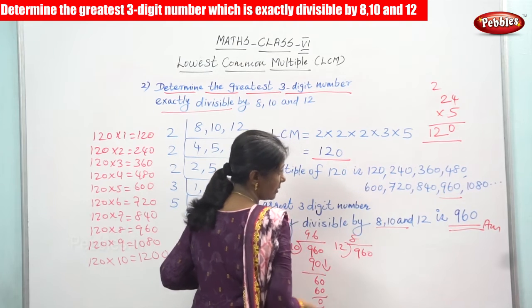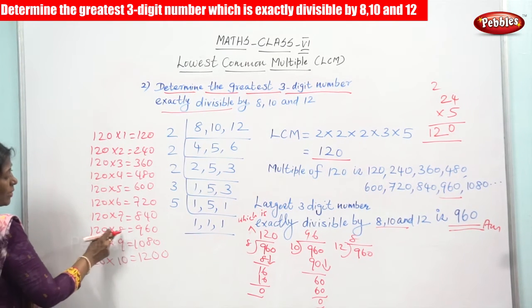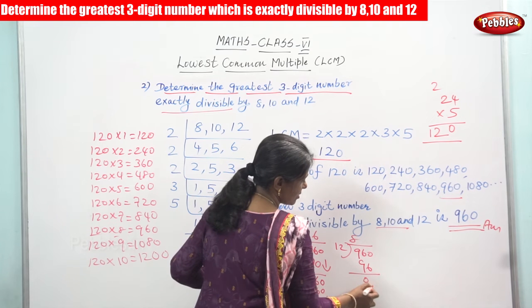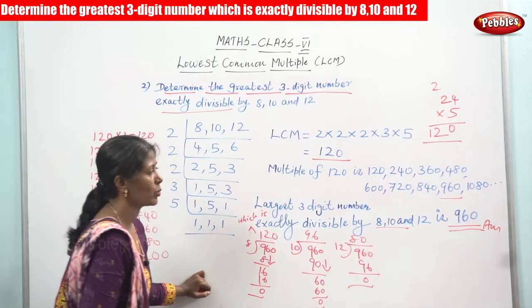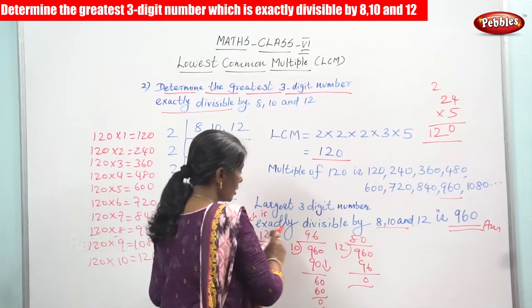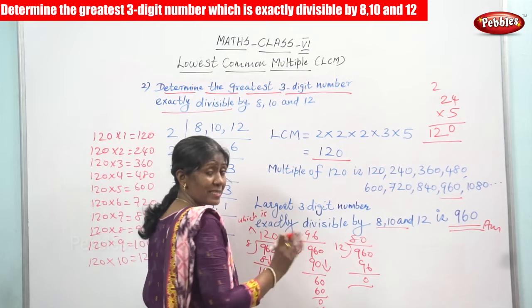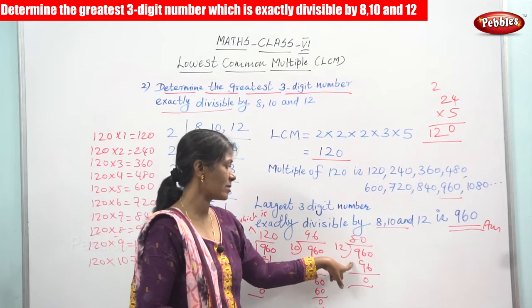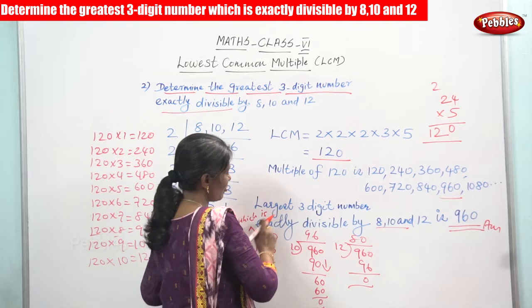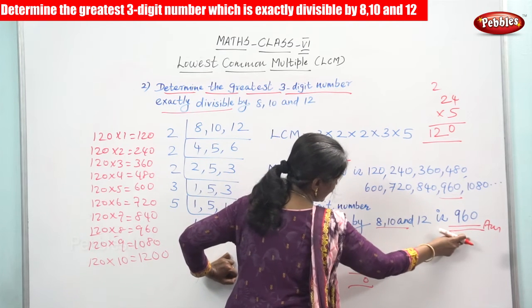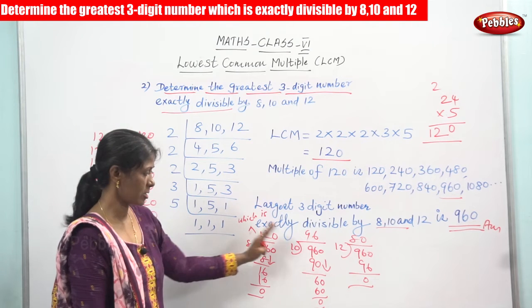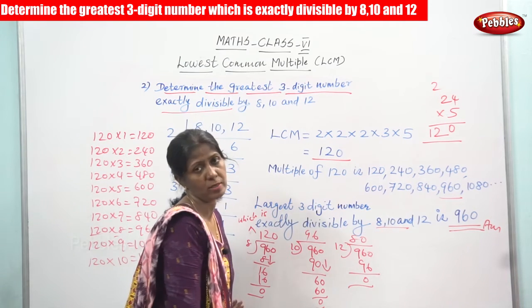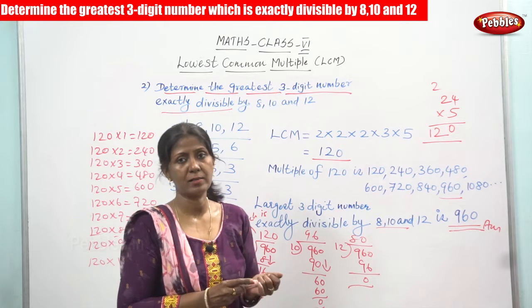Finally, 960 divided by 12: from our table, 120 × 8 = 960, so 12 × 80 = 960, giving quotient 80 and remainder 0. Divisibility means the remainder is always 0. So 960 is divisible by 8, divisible by 10, and divisible by 12. The largest three-digit number exactly divisible by 8, 10, and 12 is 960. This recheck is just for your understanding — the answer is 960.